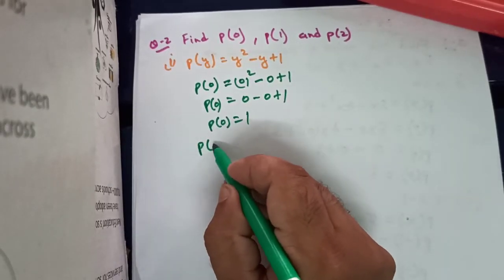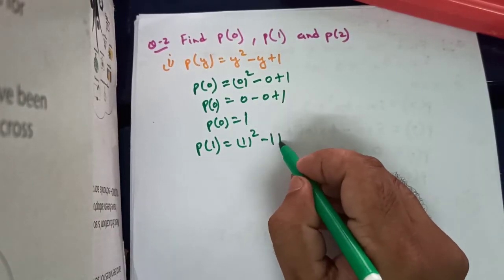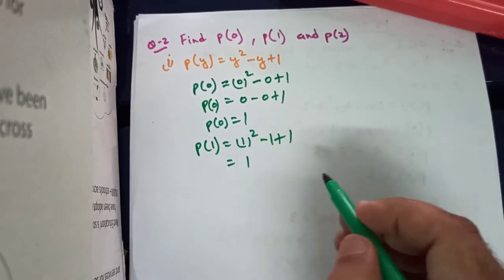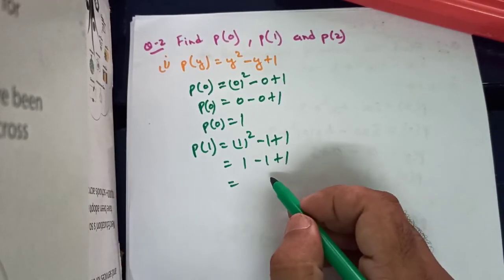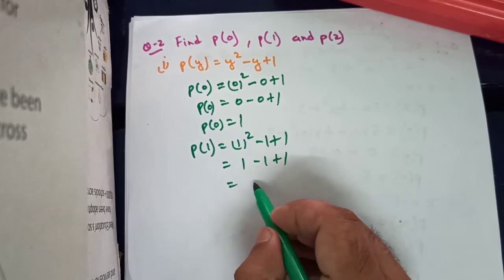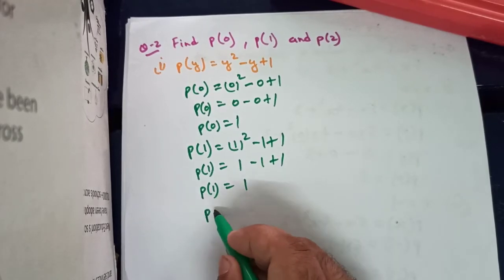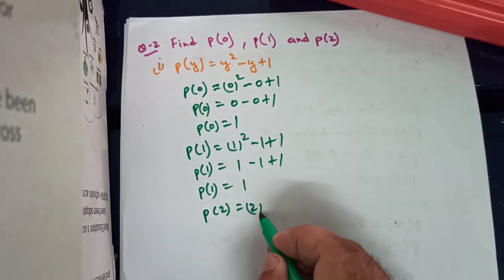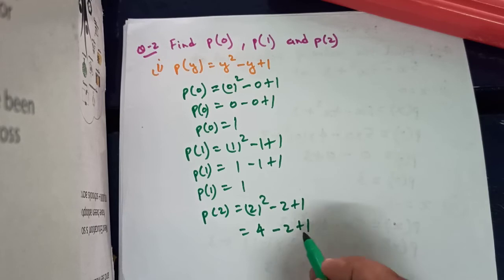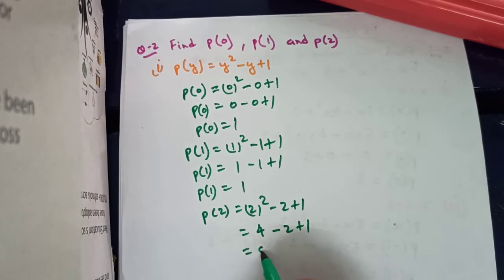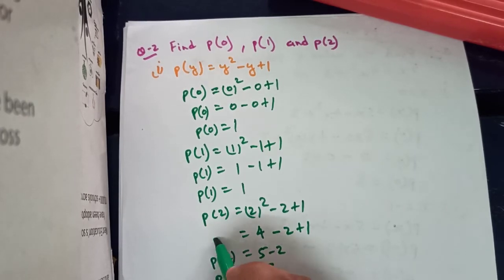Similarly calculating p(1): square of 1 minus 1 plus 1 equals 1 minus 1 plus 1, which is 1. And for p(2): square of 2 minus 2 plus 1 equals 4 minus 2 plus 1. Four plus 1 is 5, minus 2 is 3. So the value of p(2) is 3.